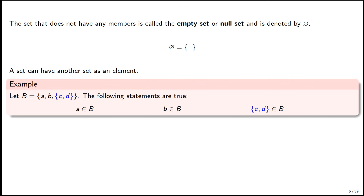If a set does not have any members at all, it's called the empty set, and we use this symbol — a circle with a line through it. If I draw this set visually, there's nothing inside of it. In formal curly brace notation, it's just two brackets with nothing inside. That is called the empty set or the null set. You will see either the curly brace notation or the circle-with-line symbol, but typically the circle-with-line symbol is used.